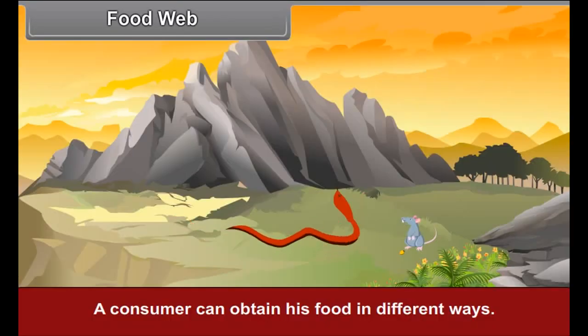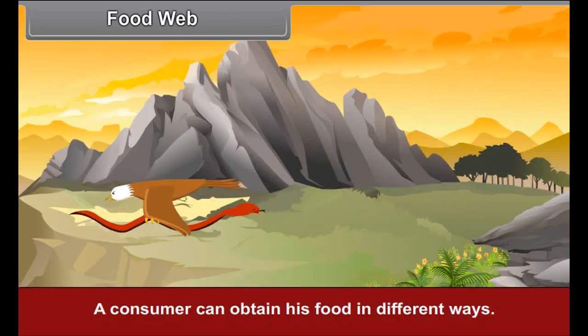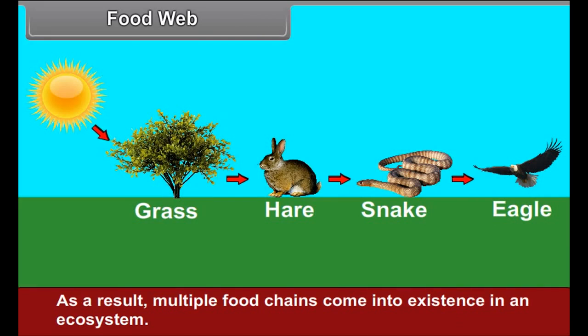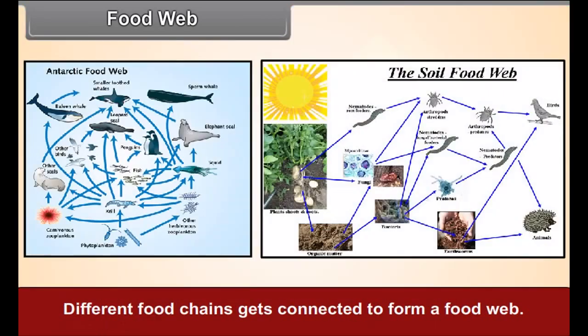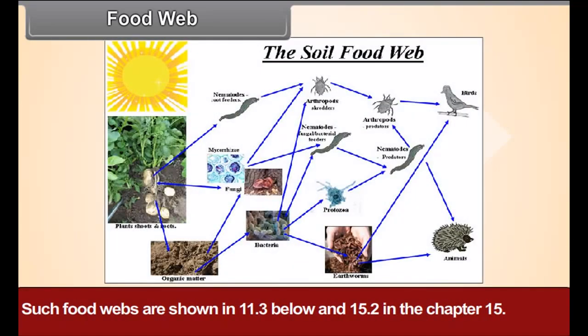Food Web: A consumer can obtain food in different ways. As a result, multiple food chains come into existence in an ecosystem. Different food chains get connected to form a food web, as shown in figure 11.3. The study of food chains and food webs can help us understand the functioning of ecosystems.